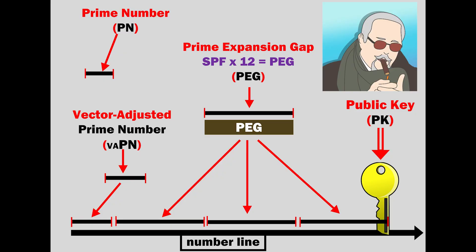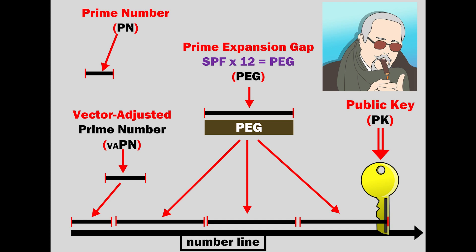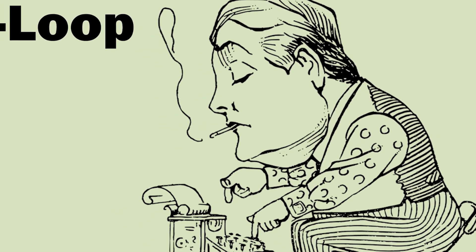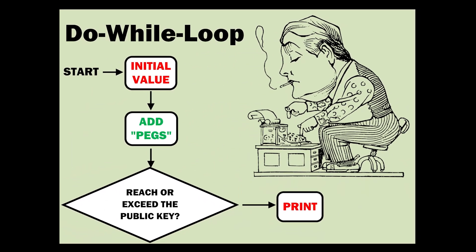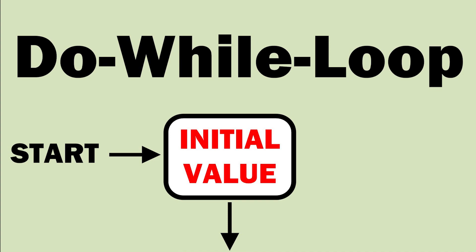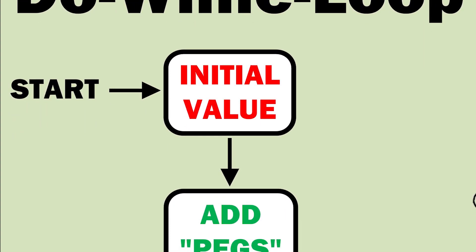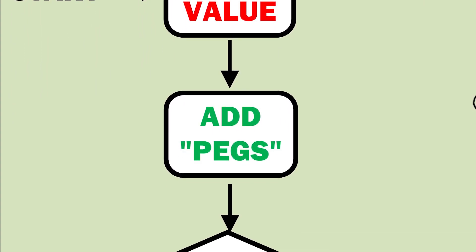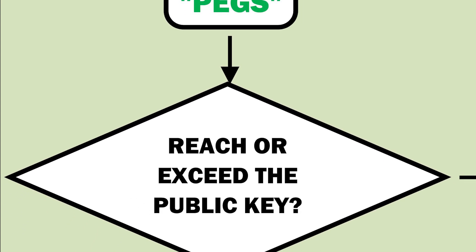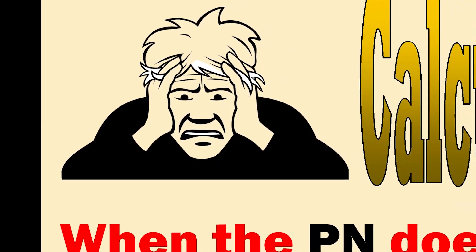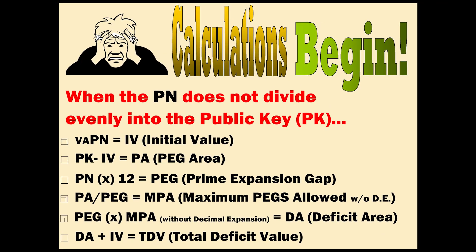What we want to know is how short the last peg is in relation to the public key — we call this the deficit pi. Of course, if you know programming, the computer can do this much faster. You would use a while loop: start with the initial value, then add pegs until you reach or exceed the public key. Now, let the calculations begin.